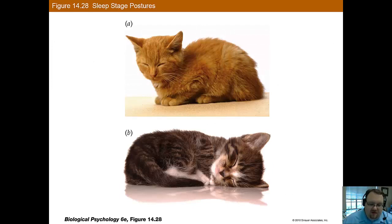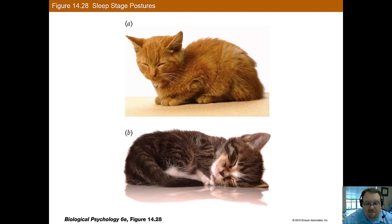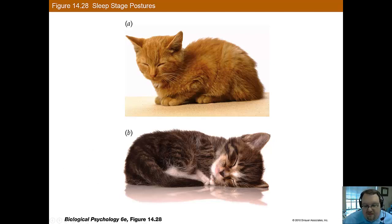The inhibited motor neurons are what cause atonia — a lack of muscle tension during REM sleep. In cats, you can tell whether or not they're in REM sleep by their body posture. The top cat is in the sphinx position, which requires muscle tension and thus cannot be attained during REM sleep. The bottom cat could be in either slow-wave sleep or REM sleep — you can't tell from posture alone — but the sphinx position of the top cat tells us it is definitely not in REM sleep.